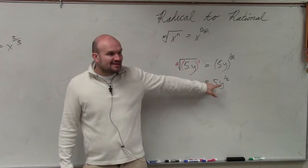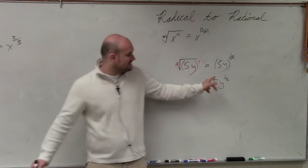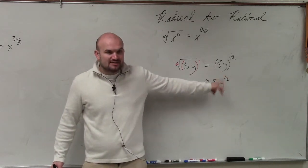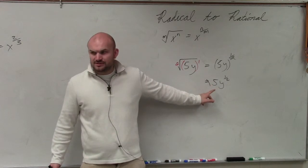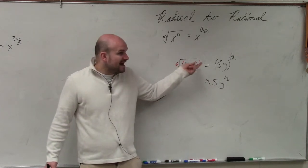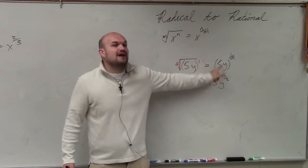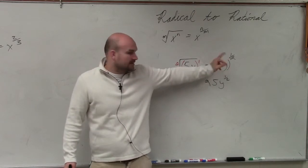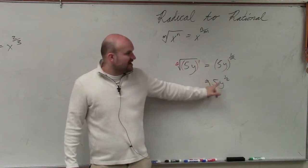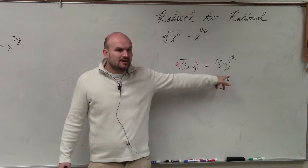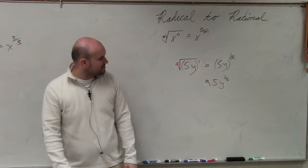If you wrote it like this, this just says y to the 1 half power times 5. Do you guys see the difference? You're taking the square root of 5 and y. So you have to raise 5 and y to the 1 half power. If you wrote it like this, this just says 5 times y to the 1 half power. So that's why the parentheses are so important.